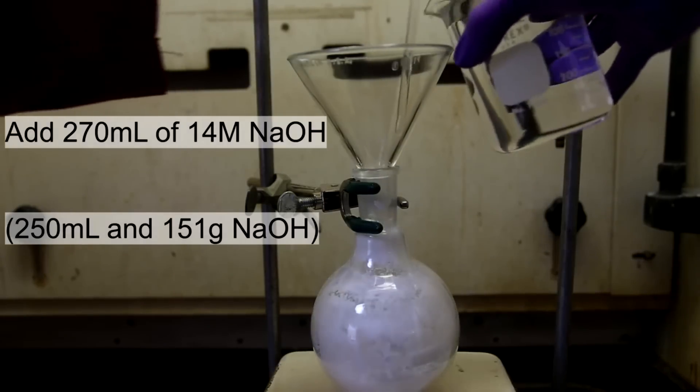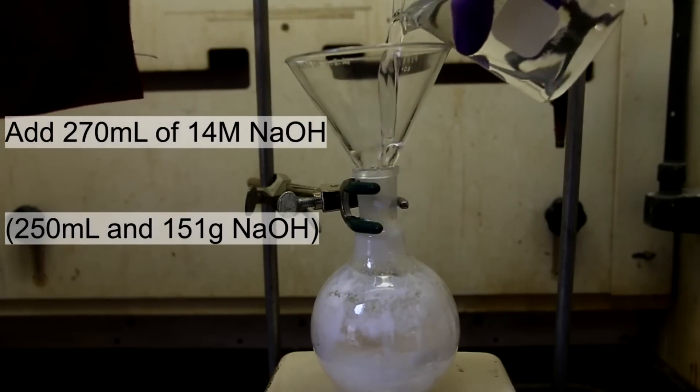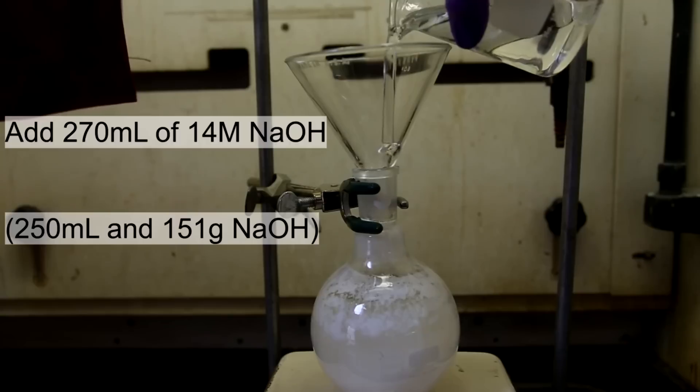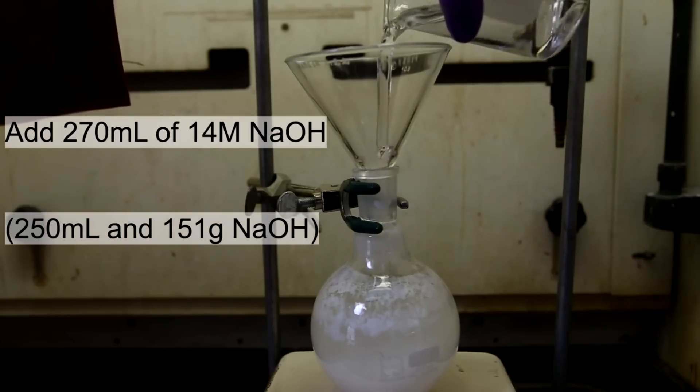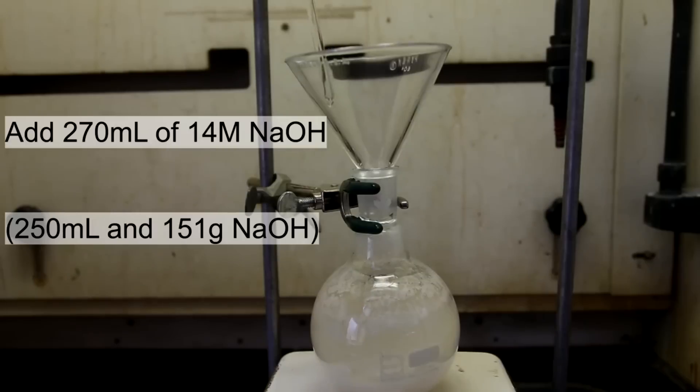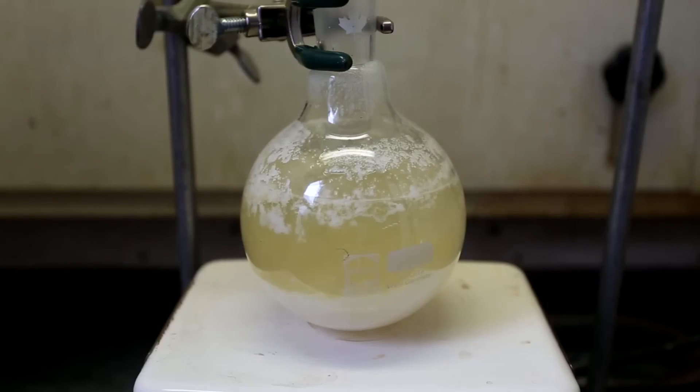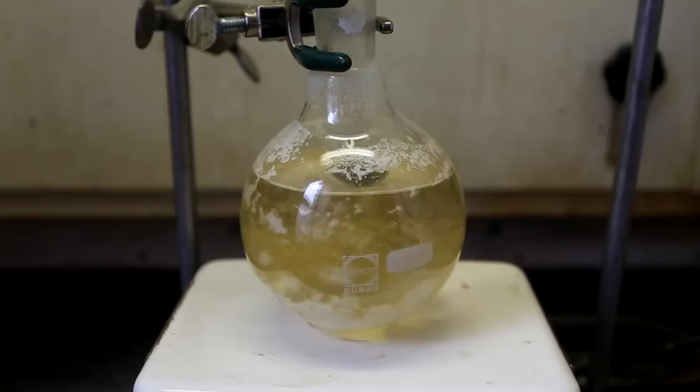To the round bottom flask, I added 270 milliliters of 14 molar sodium hydroxide. An excess of sodium hydroxide is used to make sure that the reaction goes to completion. The solution was stirred and eventually all of the acetylsalicylic acid powder was dissolved into the sodium hydroxide solution. The solution became a yellow color and heated up a lot and became quite hot.